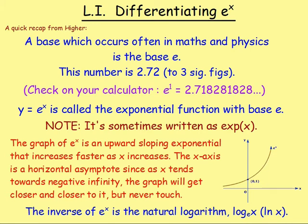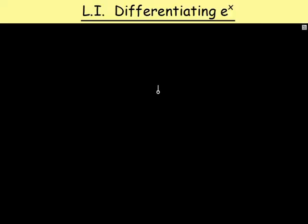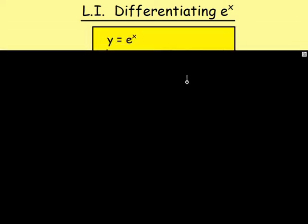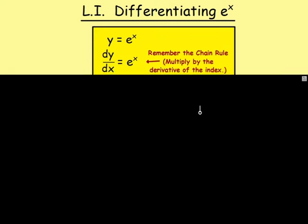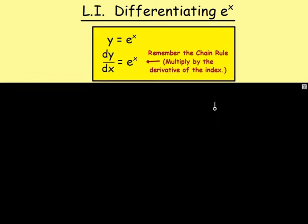What we're going to do now in advanced higher is differentiate e to the power of x. Differentiating e to the power of x is probably one of the easiest parts in advanced higher maths, because if y equals e to the power of x, it just stays as e to the power of x. However, that is only if you have e to the power of x. If you had e to the power of 2x, you'd have to apply the chain rule — differentiate the 2x to get 2, and multiply by that 2, giving 2e to the power of 2x. So e to the power of anything stays as it is, but you must multiply by the derivative of the index.